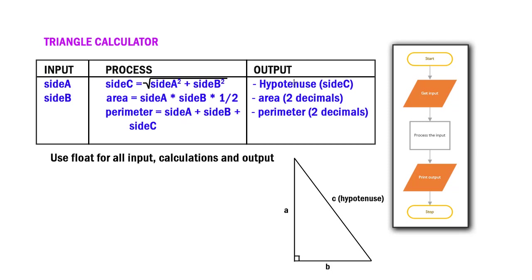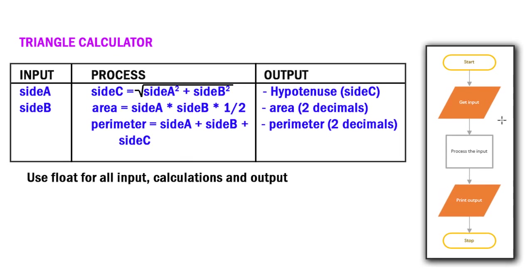And then our output, we're going to show the hypotenuse, the area, and the perimeter. And here's the flowchart, getting the input, processing, output.